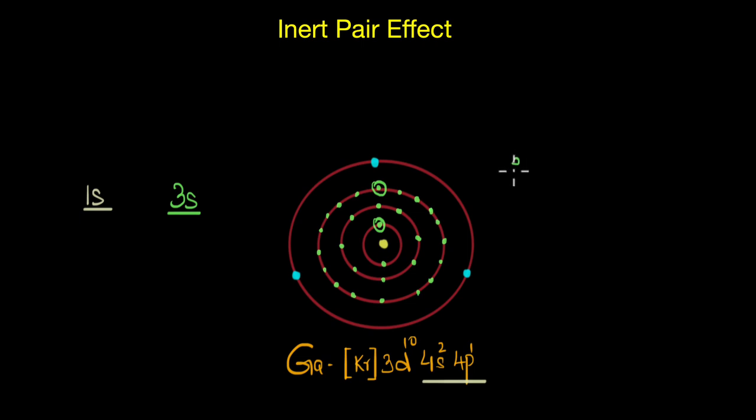Shielding is nothing but the electron-electron repulsion between the inner core electrons and the valence electron, because of which the effective nuclear charge decreases. Then according to him, the 3s electrons would repel the valence electrons better than the 1s electron which is much farther away from the valence electron.